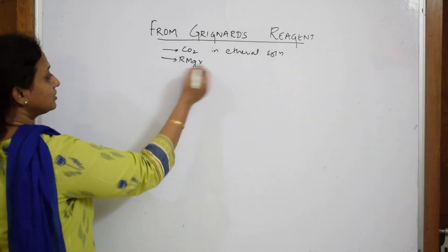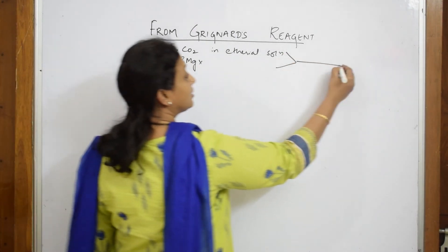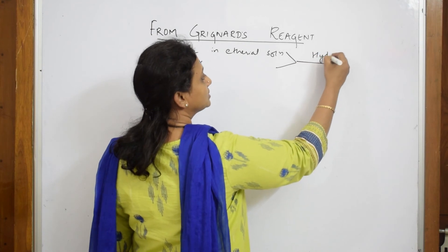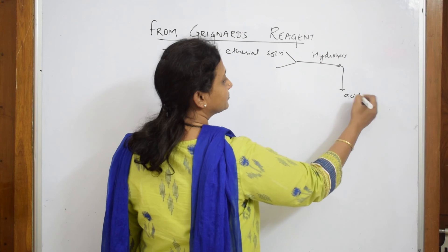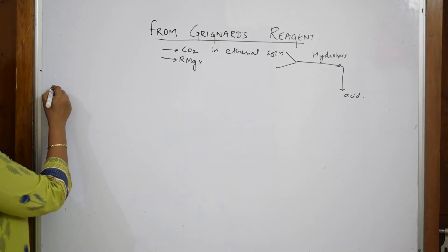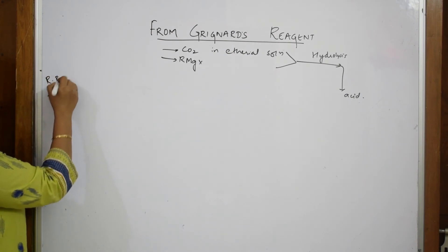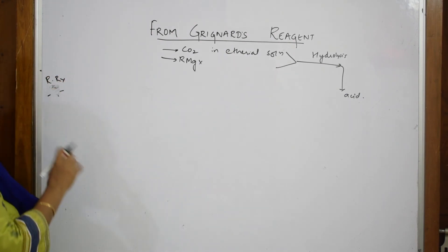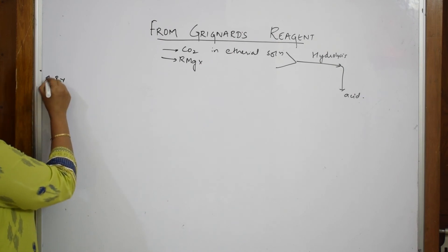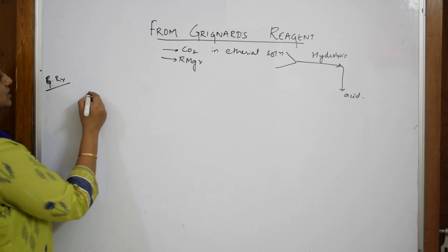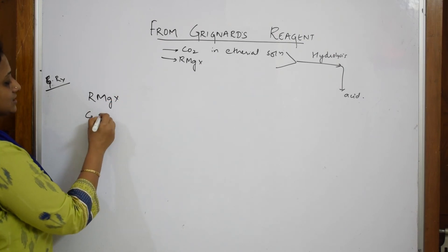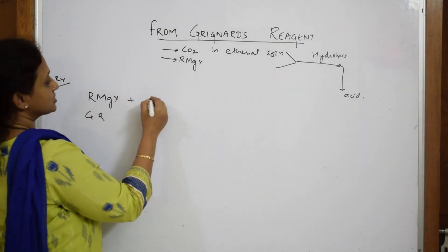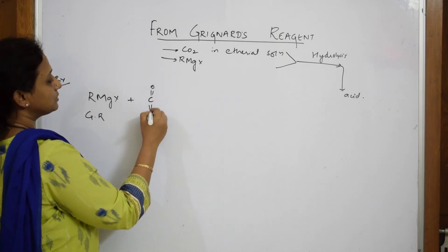The most important thing when preparing an acid from Grignard's reagent: the important conditions are you require carbon dioxide. You require R-Mg-X. Now this carbon dioxide is going to be taken in ethereal solution. We are going to dissolve it in ethereal solution and then add it to your Grignard's reagent. This is your Grignard's reagent. To this you are going to add carbon dioxide, C double bond O, C double bond O.